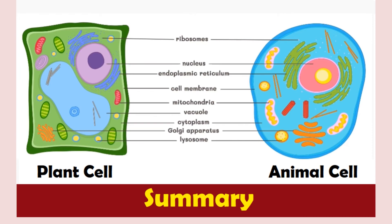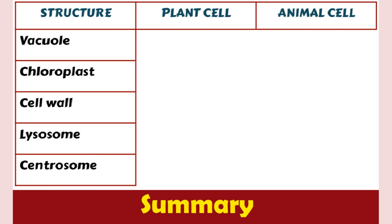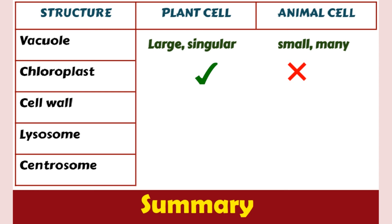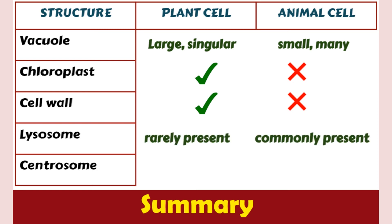Those are the basic organelles of the cell. Now, here is a table comparing the structures found in plant and animal cells. Plant cells have a large singular vacuole, while animal cells have many smaller vacuoles. Plant cells have chloroplasts and a cell wall, while animal cells don't. Lysosomes are rarely present in plant cells but are present in almost every animal cell. And lastly, animal cells have a centrosome, while plant cells do not.